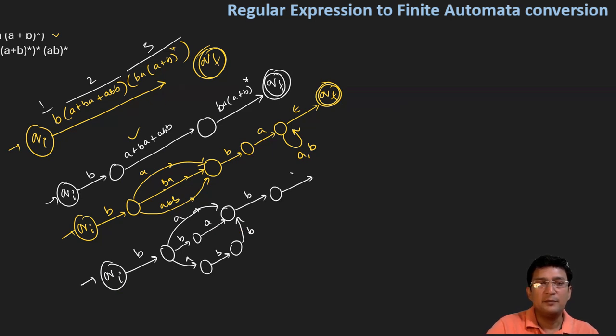Further we have b, and then further we have a, and then a or b, and epsilon that is leading us to the final state. So this is the complete automata for the given regular expression.